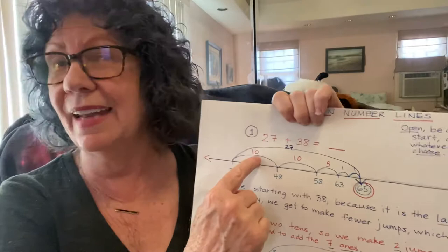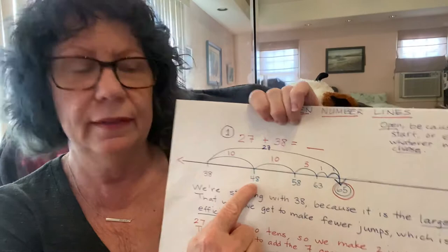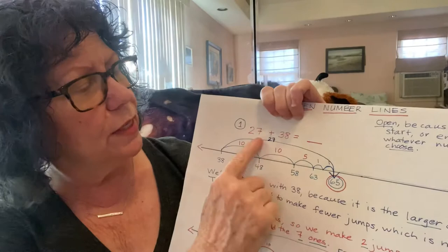So 38, one jump of 10 gets us to 48. The next jump of 10 gets us to 58. Then we still have to add the seven ones.